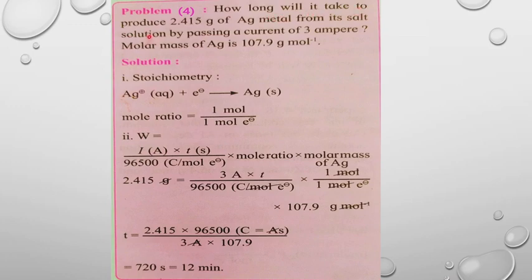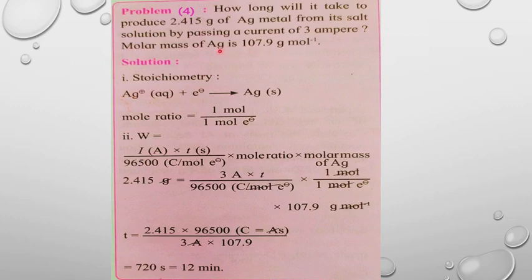The problem asks: how long will it take to produce 2.415 grams of silver metal from its salt solution by passing a current of 3 amperes? Given: the molar mass of silver is 107.9 grams per mole.